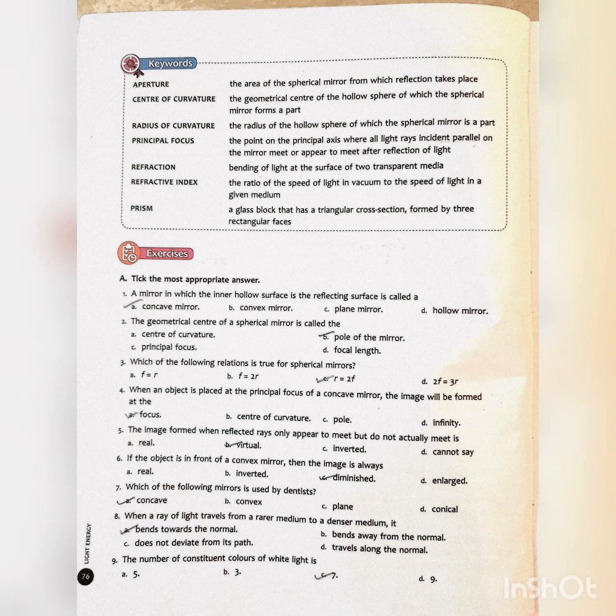First one: A mirror in which the inner hollow surface is the reflecting surface is called a... Answer is A, concave mirror. Second, the geometrical center of a spherical mirror is called the... Answer is B, pole of the mirror.